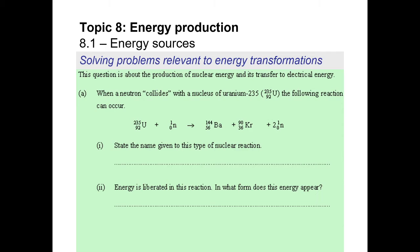We're moving on to the third part. This question is about the production of nuclear energy and its transfer to electrical energy. Part A: when a neutron collides with a nucleus of uranium-235, the following reaction can occur. It says 'can occur' because it doesn't necessarily have to fission into barium and krypton — it might result in two other products. State the name given to this type of nuclear reaction. The answer is nuclear fission — the splitting of a heavy uranium isotope.